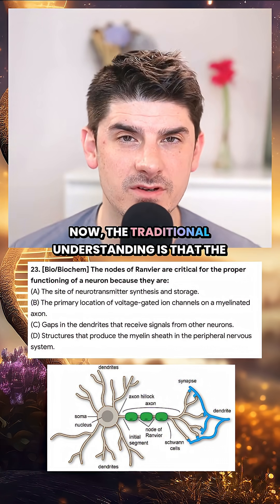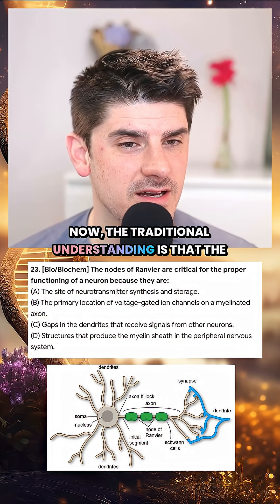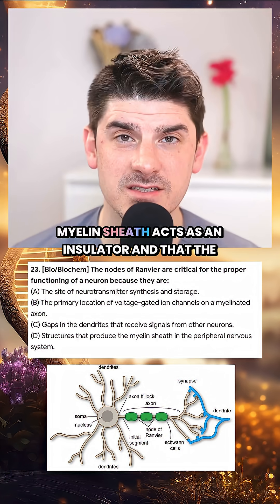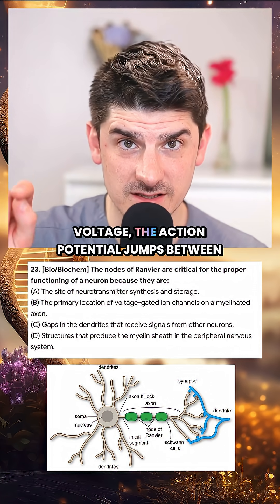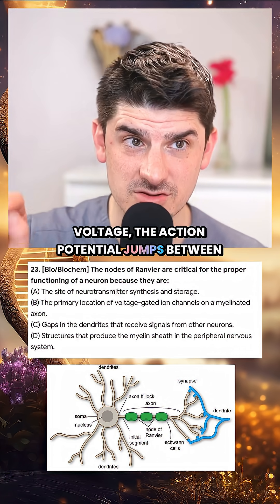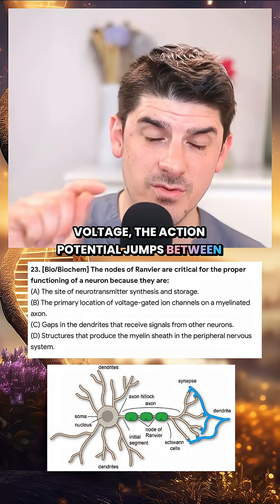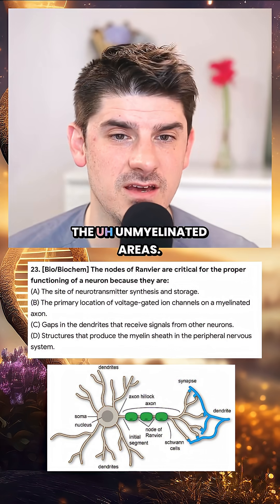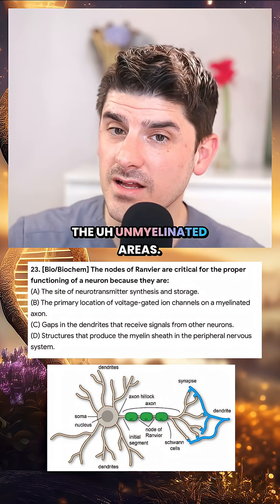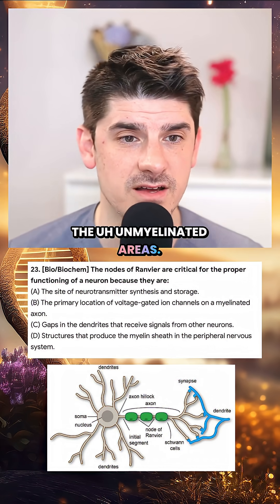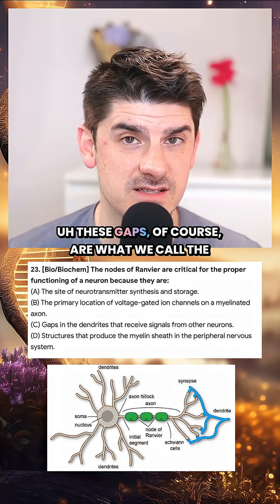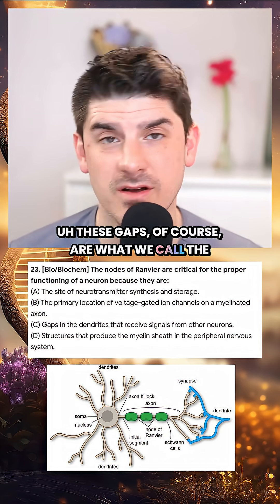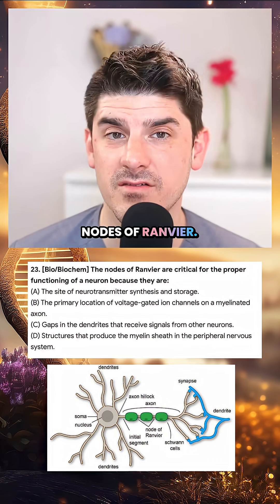The traditional understanding is that the myelin sheath acts as an insulator, and that the action potential jumps between the unmyelinated areas. These gaps, of course, are what we call the nodes of Ranvier.